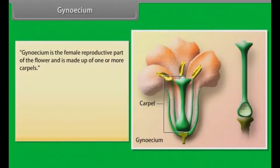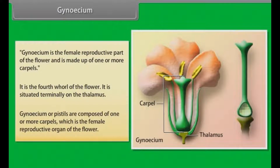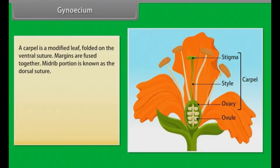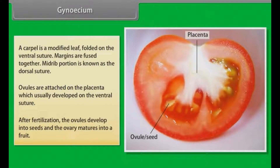Gynoecium is the female reproductive part of the flower and is made up of one or more carpels. It is the fourth whorl of the flower, situated terminally on the thalamus. Gynoecium or pistil is composed of one or more carpels, which is the female reproductive organ of the flower. A carpel is a modified leaf folded on the ventral suture, with margins fused together. The midrib portion is known as the dorsal suture. Ovules are attached on the placenta, which usually develops on the ventral suture. After fertilization, the ovules develop into seeds and the ovary matures into a fruit.